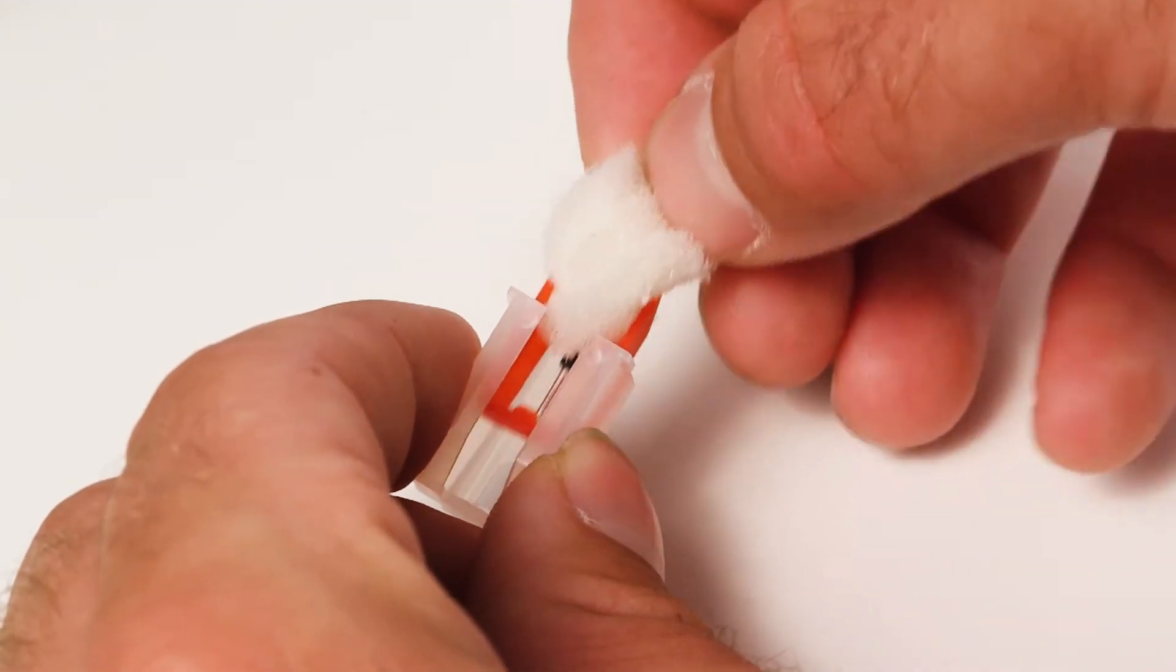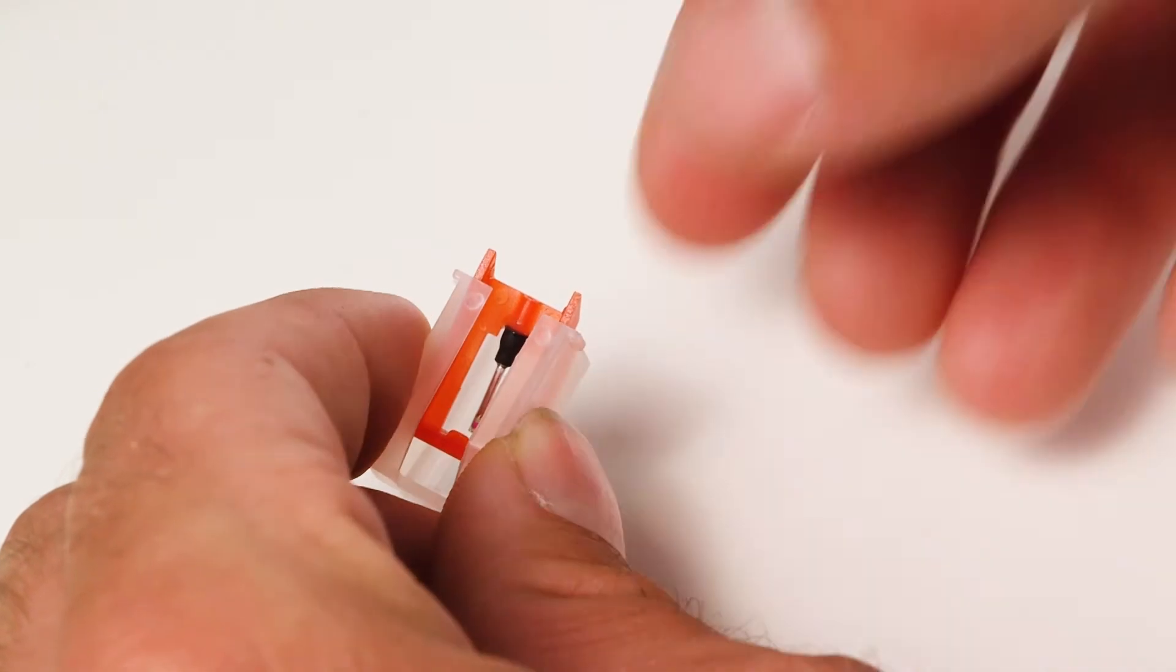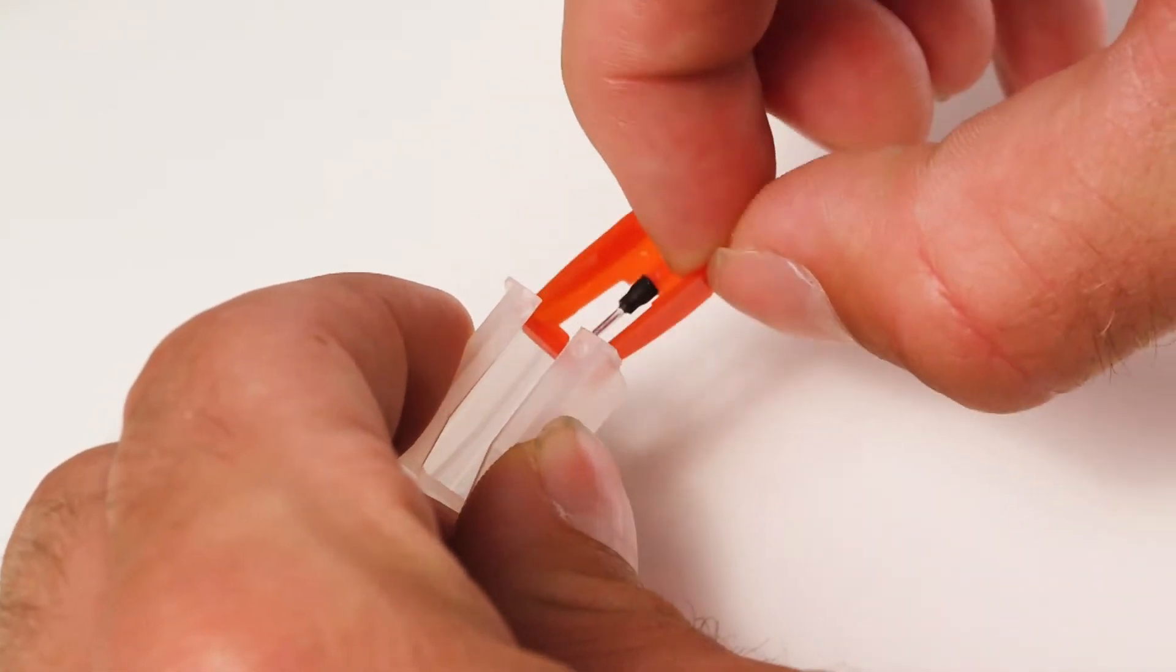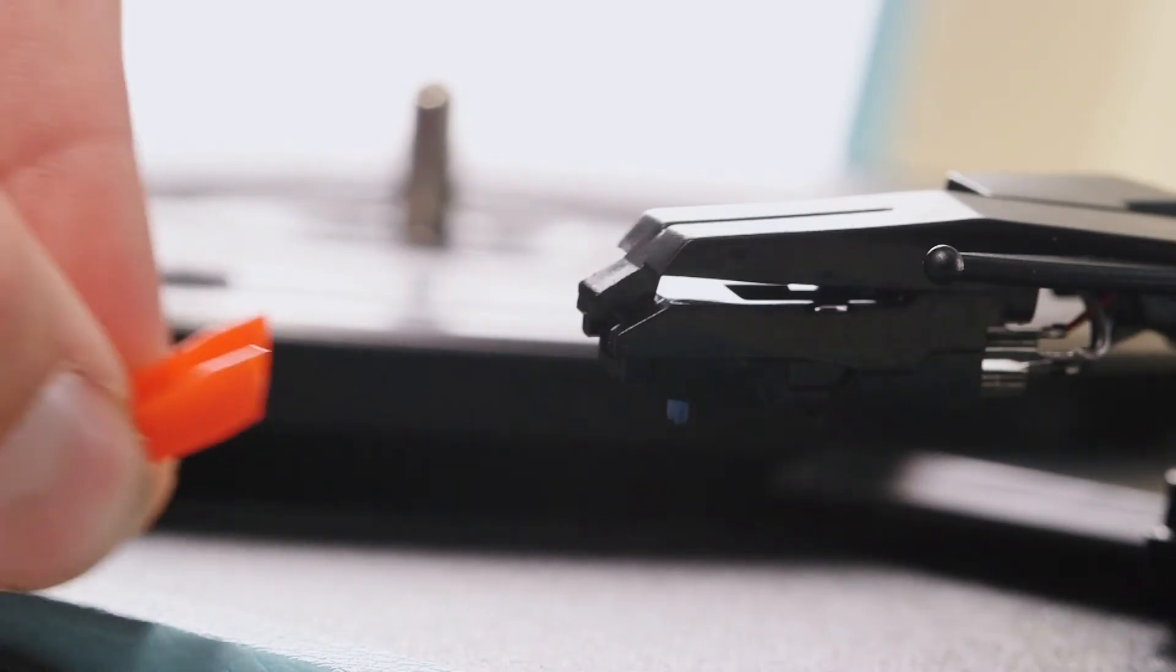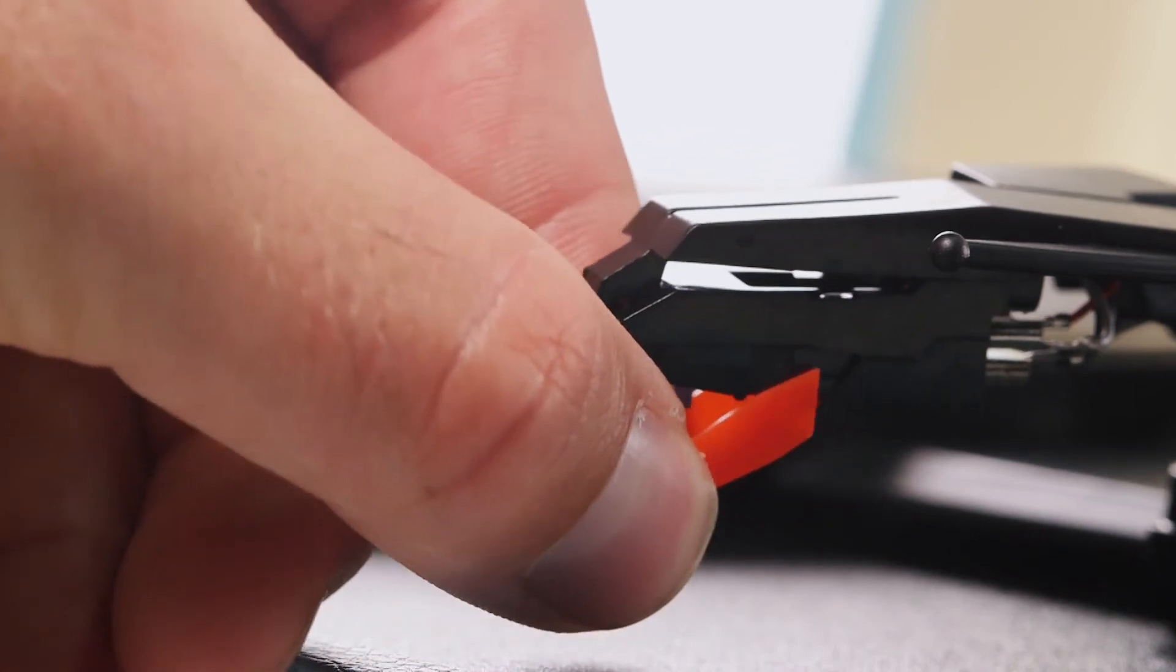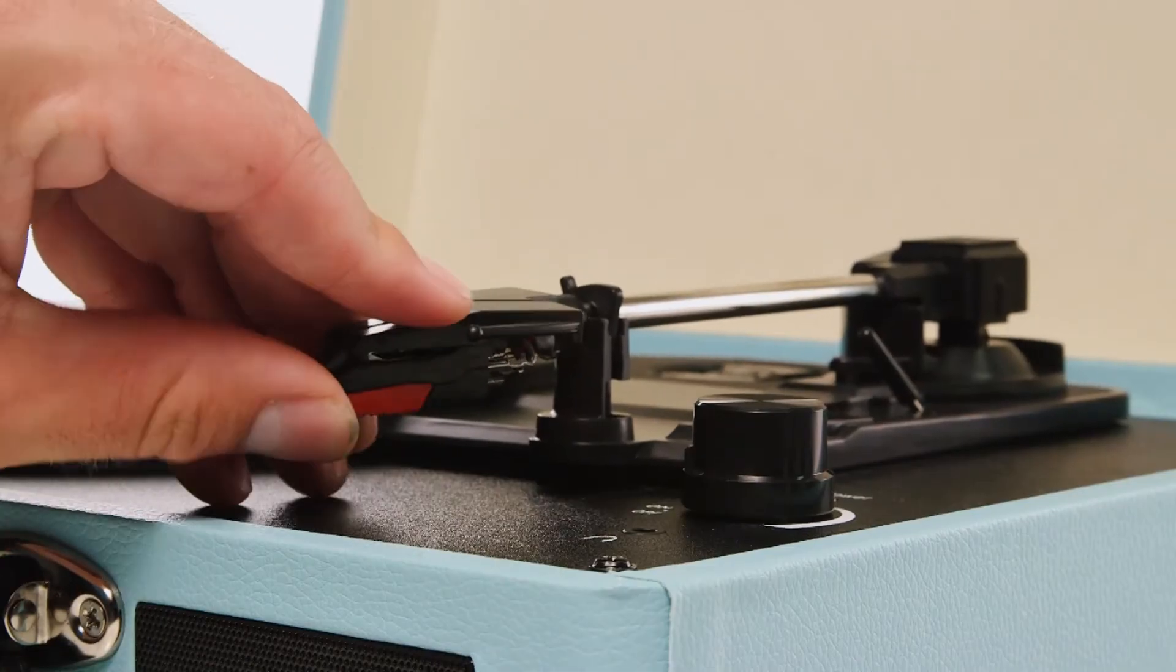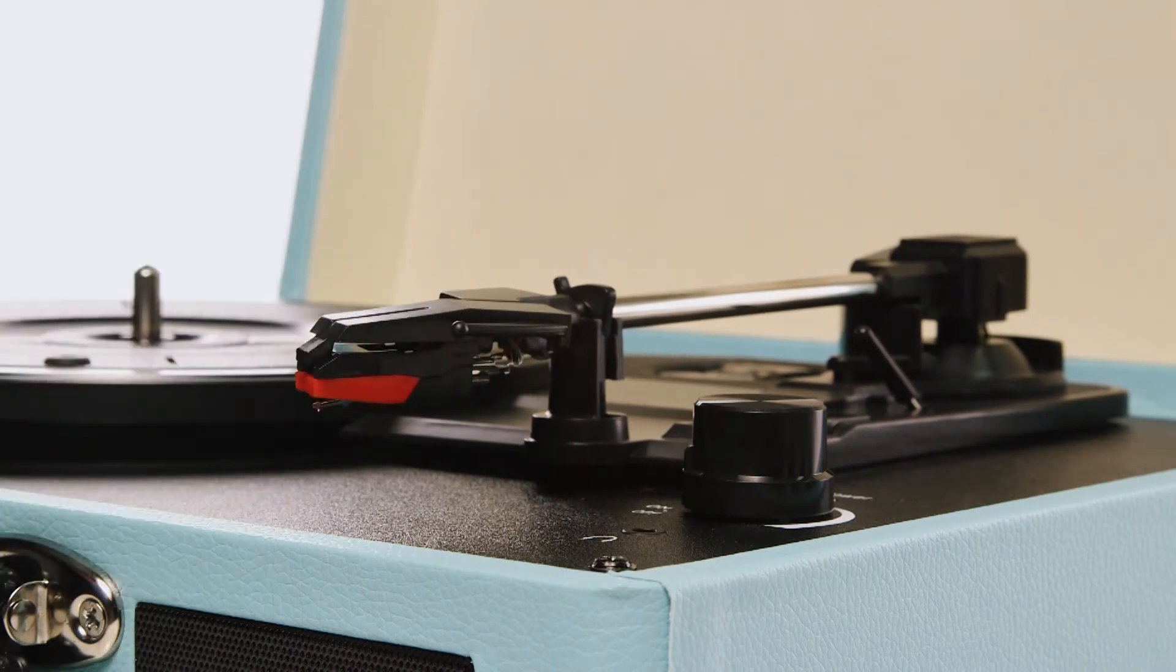You can now remove the packaging from the new stylus. Angle the stylus upward and push the corners into position. Then, push the stylus until it is clipped into position.